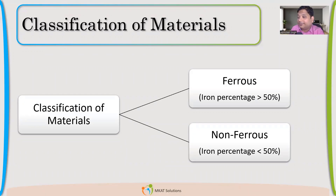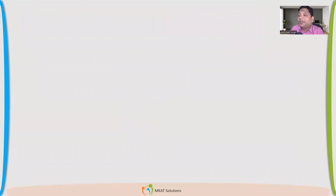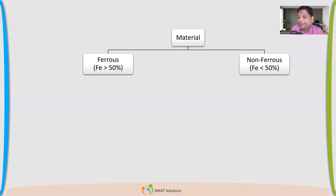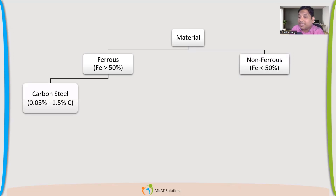So, if the percentage of iron is more than 50%, it is named after that element — iron — making it ferrous. Now let us further classify them. In ferrous, because that is what we are going to use most of the time, what are the different categories? How is ferrous further classified?